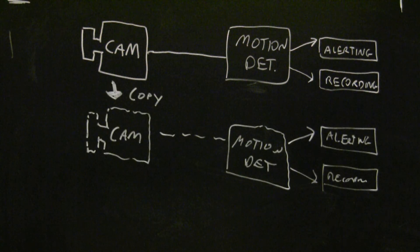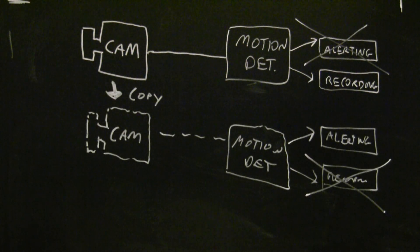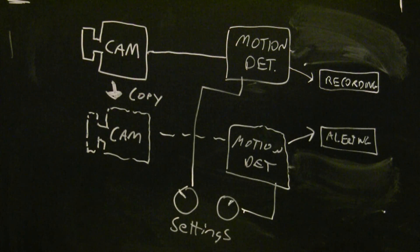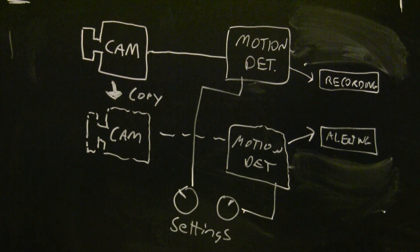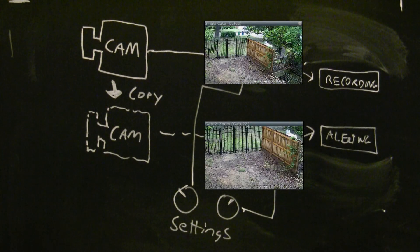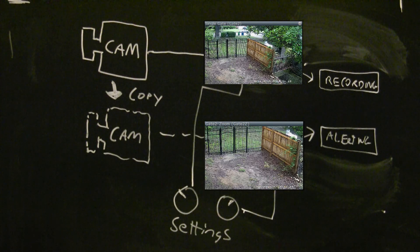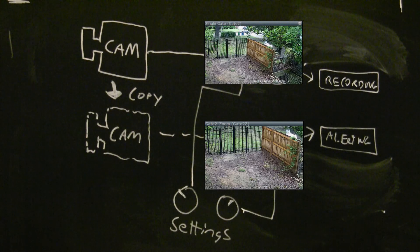So you just copy it and then you have two knobs. You have one virtual camera that's responsible for recording, the other is responsible for alerts. It's the same physical camera, just two virtual cameras. I have a camera that records all the time with very liberal settings, and then another camera that just handles the alerts. So you can adjust and optimize the settings for each particular thing.